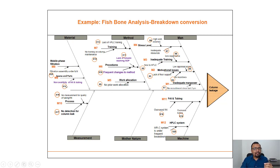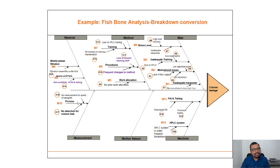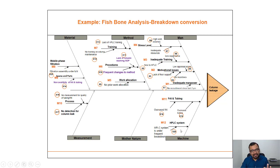Under Material, two important causes are identified: spares and parts, and mobile phase filtration. Sub-causes include non-availability of frit and tubing for spares and parts, and filtration assembly under breakdown for mobile phase filtration. Under Measurement, the process is the cause, with the sub-cause being no measurement for quality of tubing or frit, or no detection for column leak. Under Mother Earth, no cause was identified. Under Machine, frit and tubing and HPLC systems are the two major causes, with sub-causes of overused frit, overused tubing, and HPLC system under frequent breakdown.